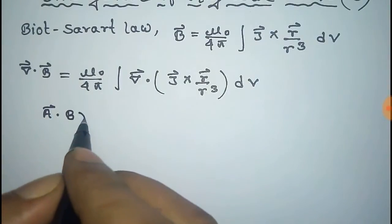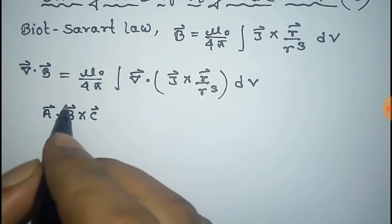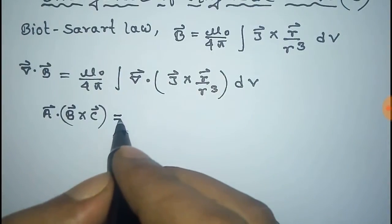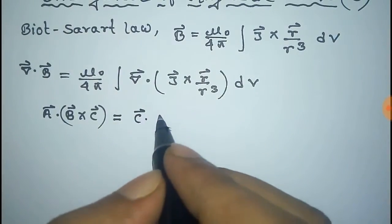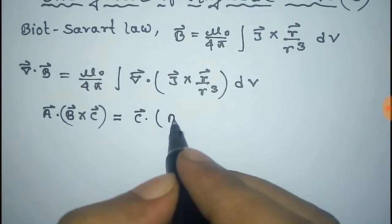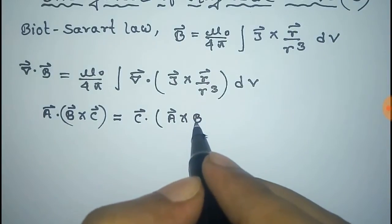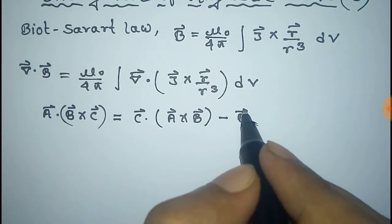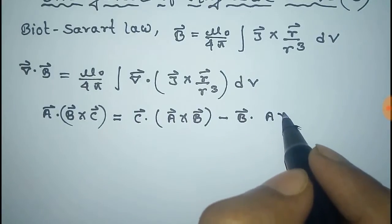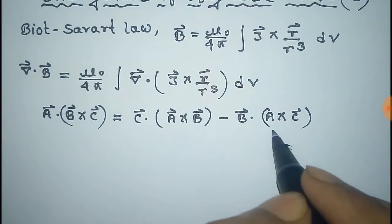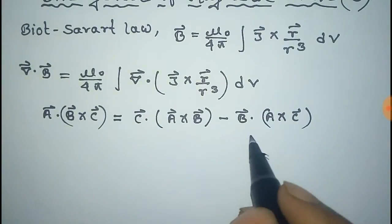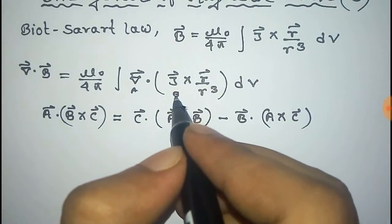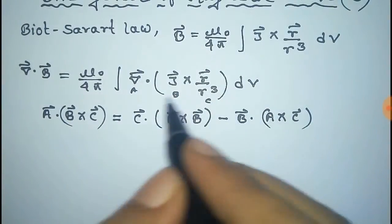Here, we use the formula a dot b cross c vector. The formula is given by c dot a cross b minus b dot a cross c. We apply this formula on this expression, taking this as a, this as b, and this as c.